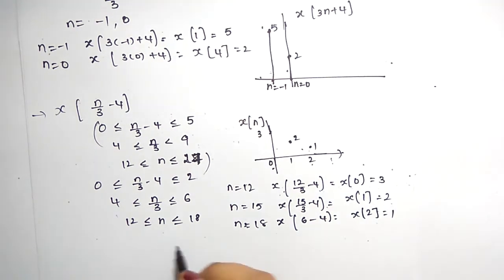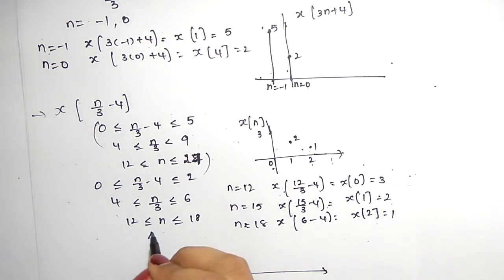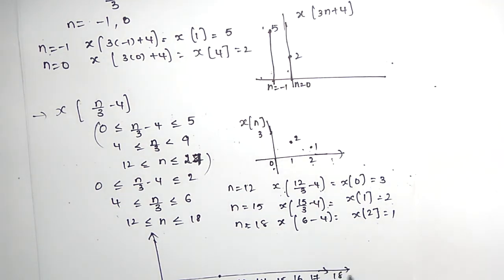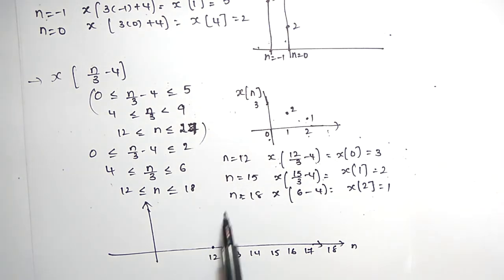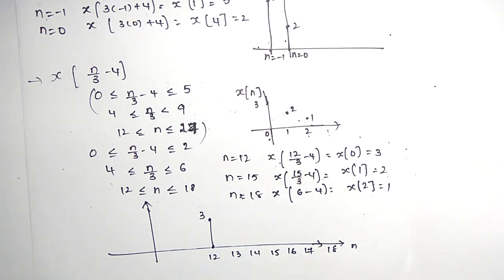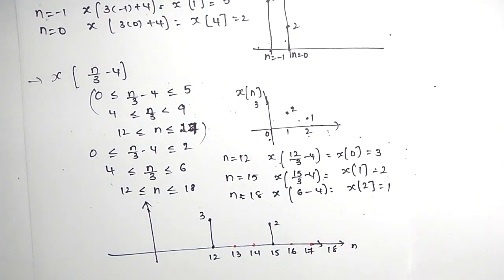So the signal lies between 12 to 18. Taking values at 12, 13, 14, 15, 16, 17, and 18: at n equals 12 you have the value x of 0 which is 3; at 13 and 14 you have 0 value; at 15 you have x of 1 which is 2; at 16 and 17 you have 0 again; and at 18 you have x of 2 which is 1. This is how you can do shifting and scaling at a time in the discrete time domain.